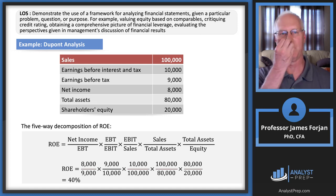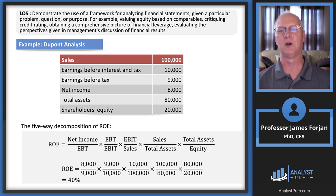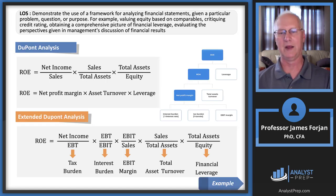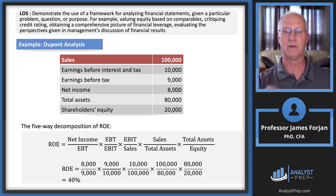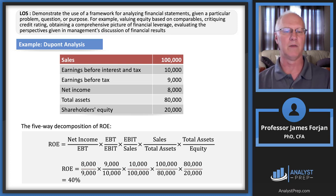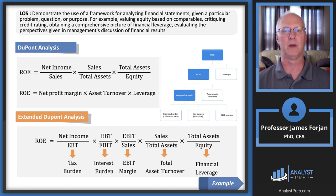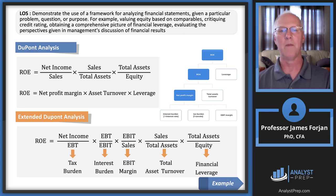Here's a quick example. We have sales, EBIT, EBT, net income, total assets, and shareholders' equity. There's a five-way decomposition of ROE, and the math comes out to 40%. It's helpful to come back and note there's a tax burden, interest burden, leverage, operating income margin, and total asset turnover. You can compute each of those five ratios, and then do trend analysis over time to see which are increasing or decreasing and where the majority of performance comes from.